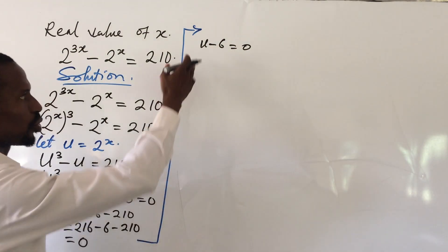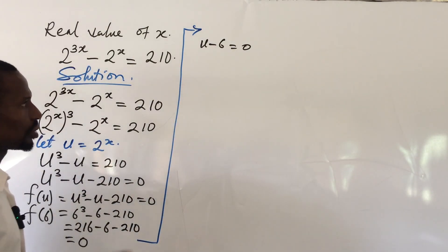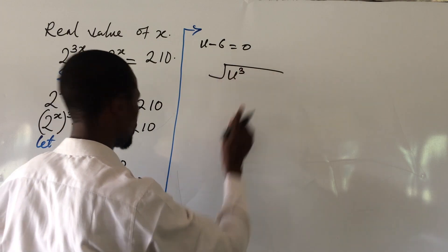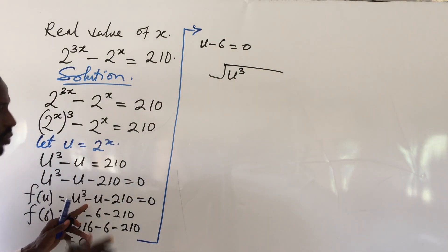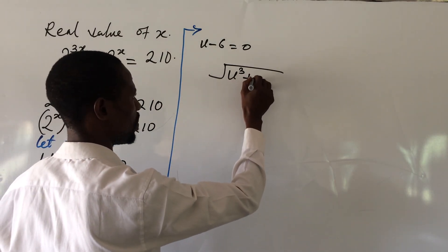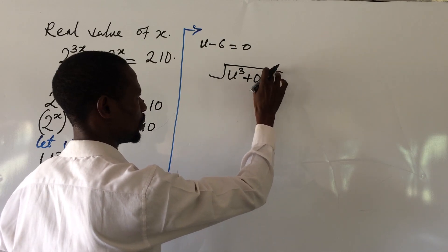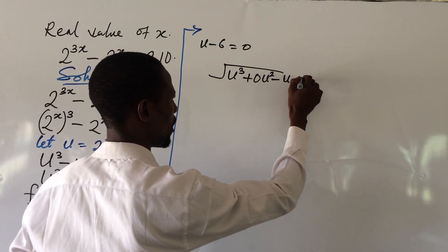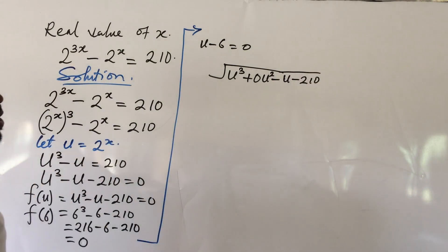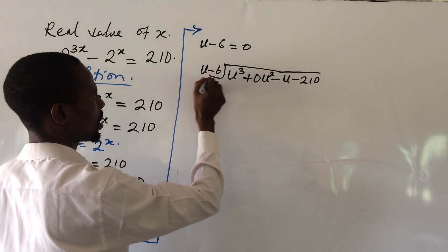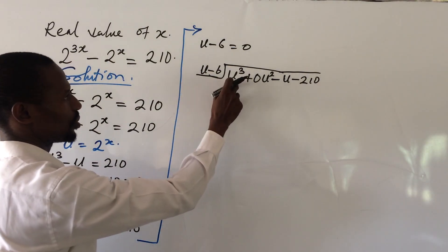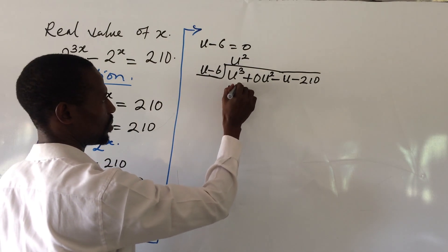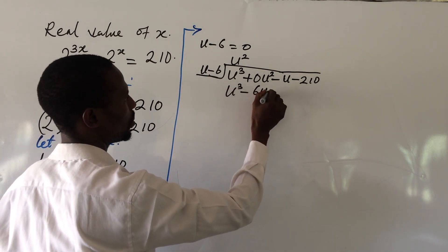Since (u minus 6) is a factor, we use the long division method to find the second factor. We divide u cubed plus 0·u squared minus u minus 210 by (u minus 6). Dividing u into u cubed gives u squared. Multiplying u squared by (u minus 6) gives u cubed minus 6u squared, and we carry out the subtraction.